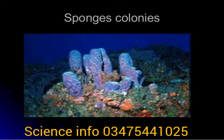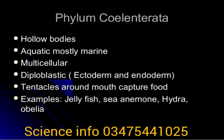Sponges have sexual reproduction as well as asexual budding and gemmules. Now we discuss Coelenterata — these are called diploblastic animals. They have special cells called cnidocytes, which give rise to nematocysts. They have an outer ectoderm and inner endoderm.